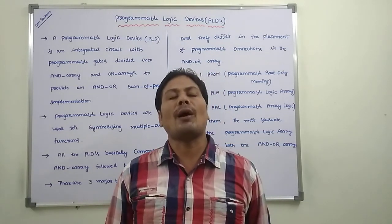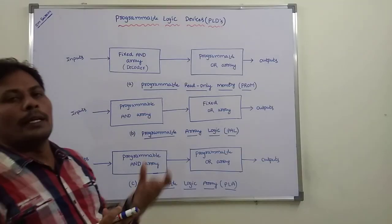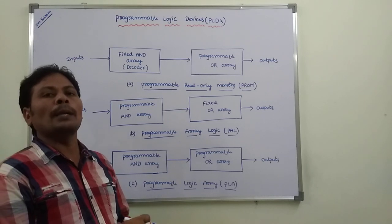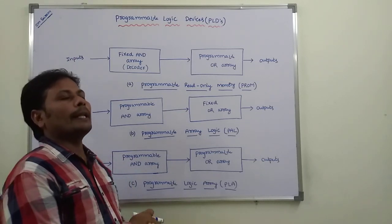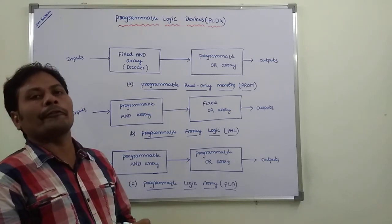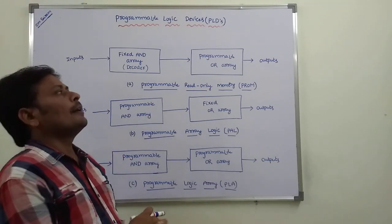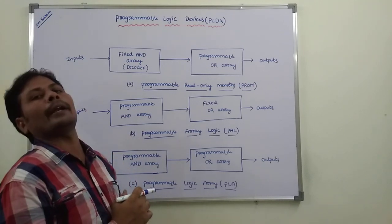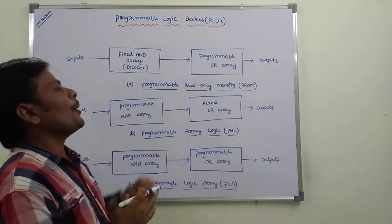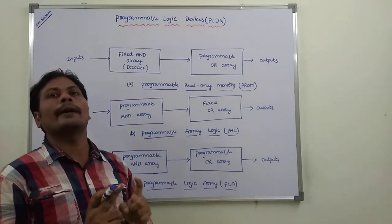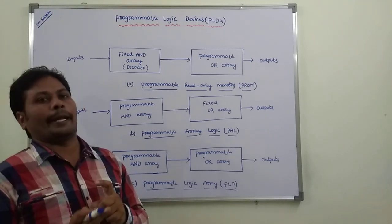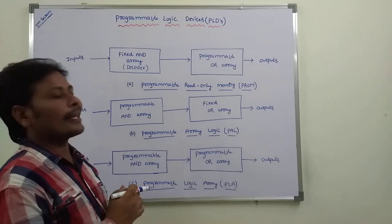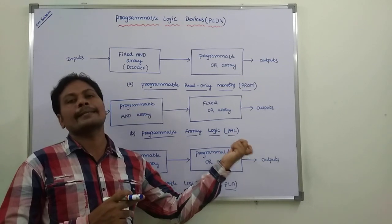Now we go for the Block Diagram of each and every PLD. These are the three commonly used PLDs. The first one is Programmable Read-Only Memory, that is PROM. In the case of PROM, it consists of a Fixed AND Array and a Programmable OR Array. The Fixed AND Array can be constructed as a decoder in the case of PROM.